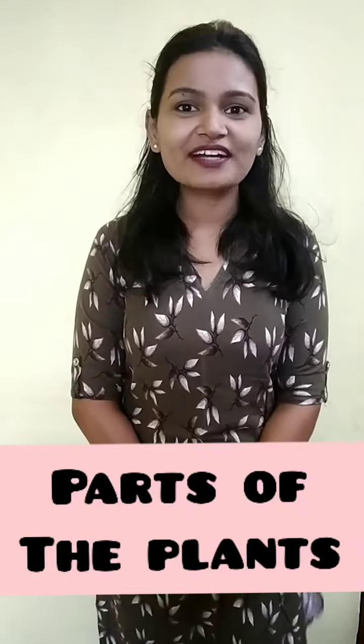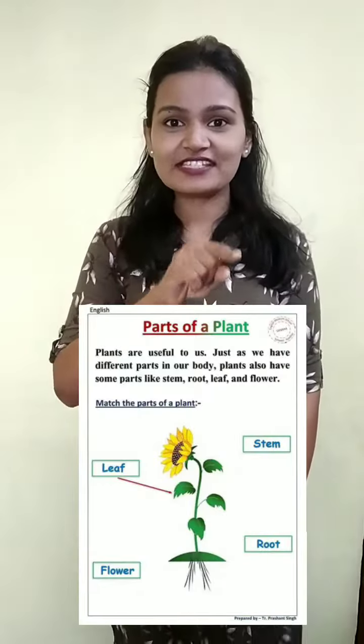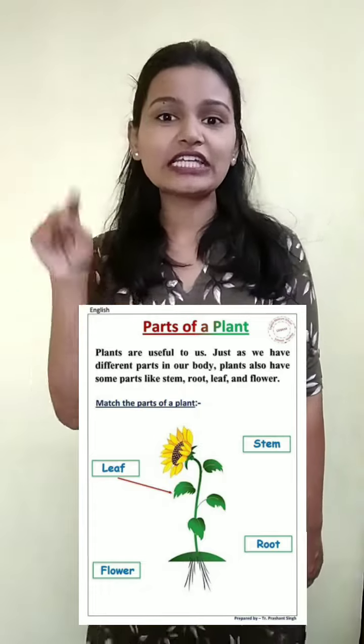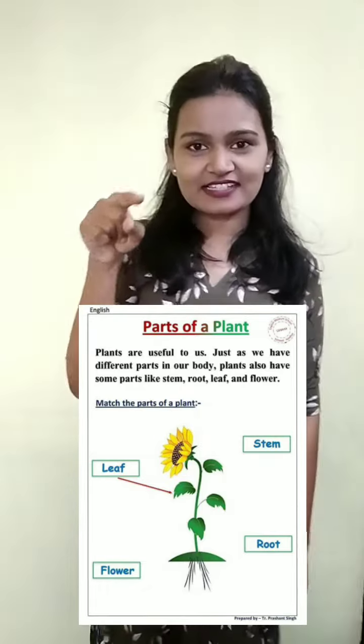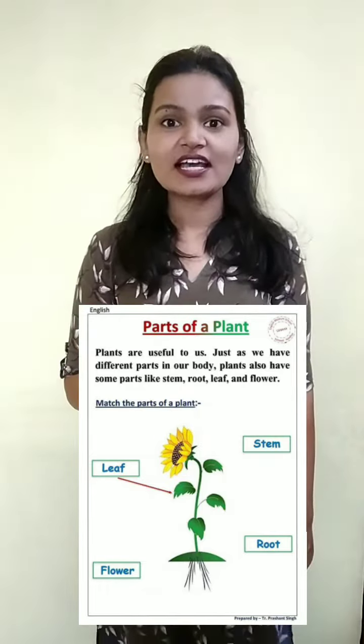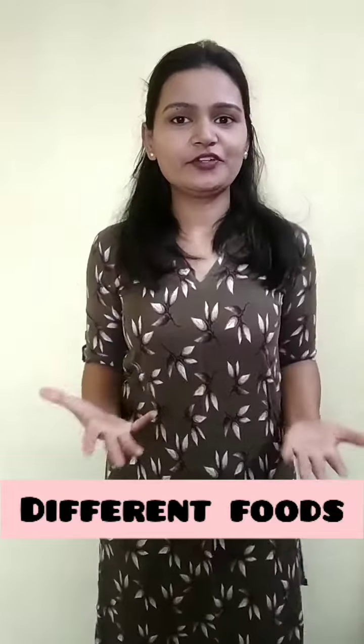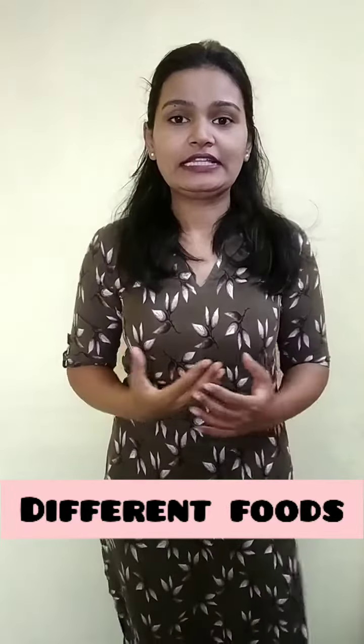Do you know, children, different parts of the plants give us different types of food? Do you know the parts of the plant? Yes — this is our stem, these are the leaves, these are the flowers, these are the roots, and fruits. So these different parts of the plant will give us different foods.